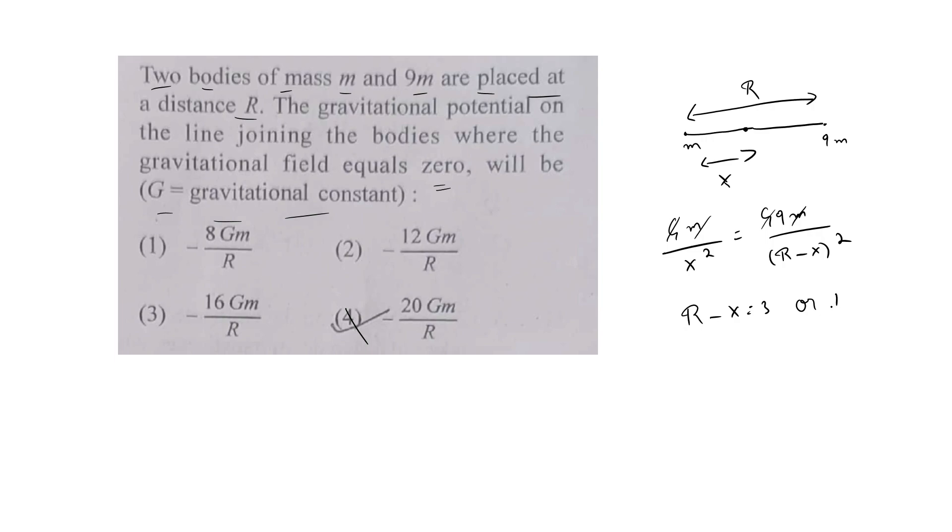I can just write it as x equals R by 4. So now we apply gravitational potential energy at R equals R by 4.